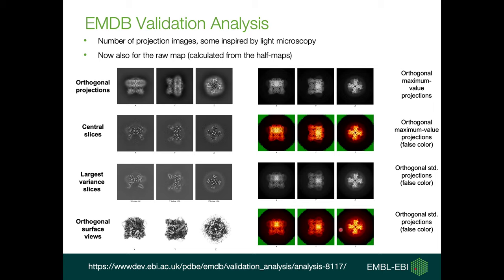For those images, we have them for both the primary map and raw map. The primary map is defined as the map deposited by the author, and the raw map is an average map calculated based on two half maps. These components will be waiting for more input from the community to decide whether they go into the validation report or not.